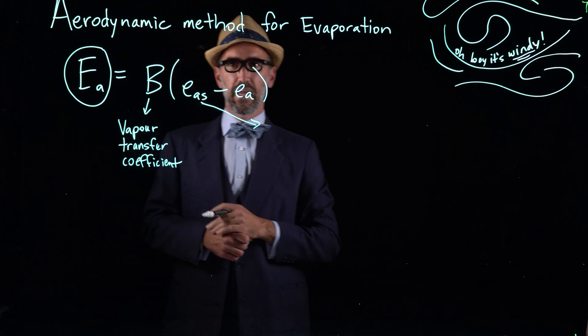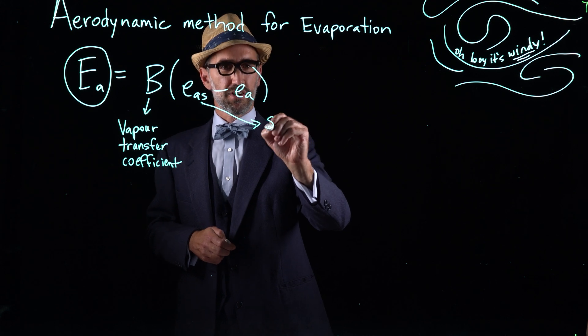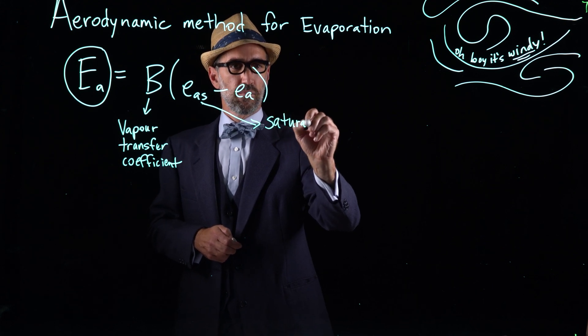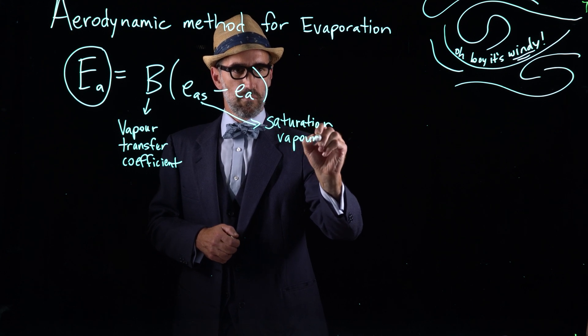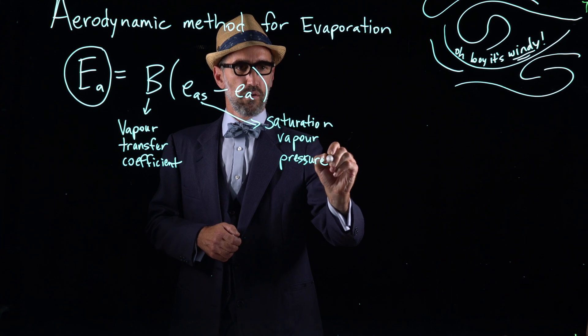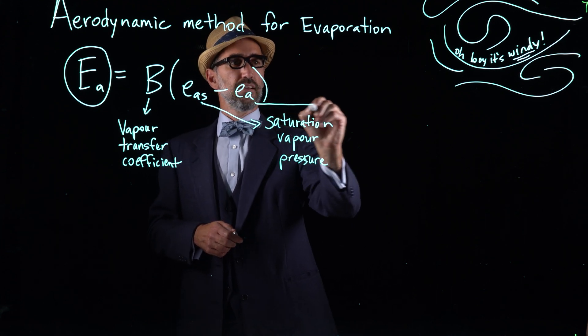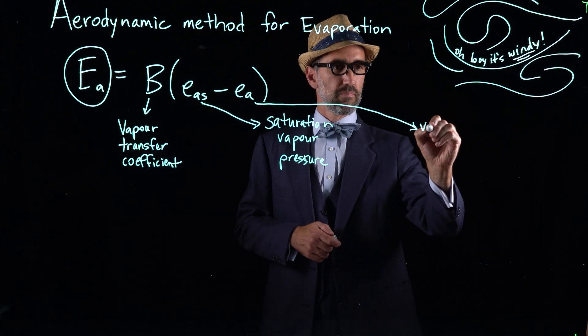E sub AS, small E sub AS, is the saturation vapor pressure. And E sub A is the actual vapor pressure.